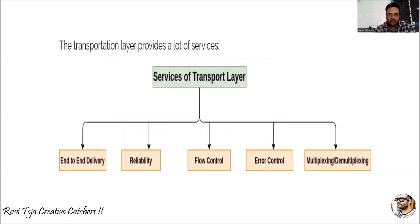The transport layer provides several services. First is end-to-end delivery — once a message has been transmitted, it confirms whether the message was received at the other end, and if needed, handles retransmission. It also checks whether the transmission of data is happening correctly. Reliability is another service — it checks whether the process is smooth, and handles corrupted or lost files.